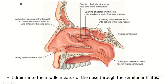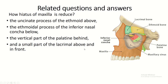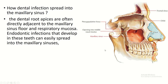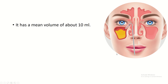The opening of the maxillary air sinus is into the semilunar hiatus. Dental infections can spread into the maxillary sinus because the dental root apices are often directly adjacent to the maxillary sinus floor and respiratory mucosa, so infection of a tooth can spread into the nasal sinus. The volume of the maxillary sinus is 10 ml.